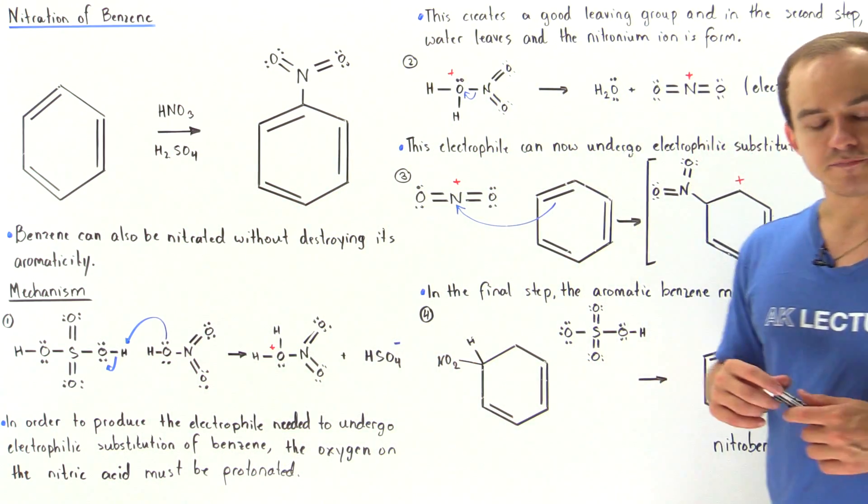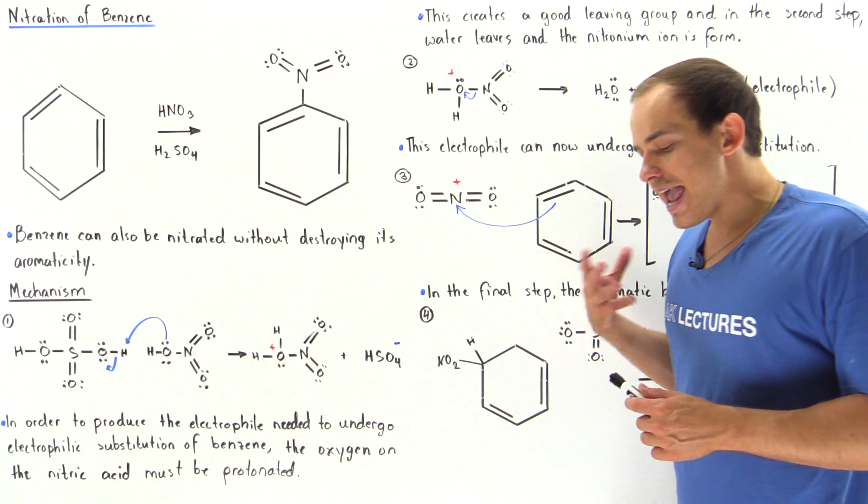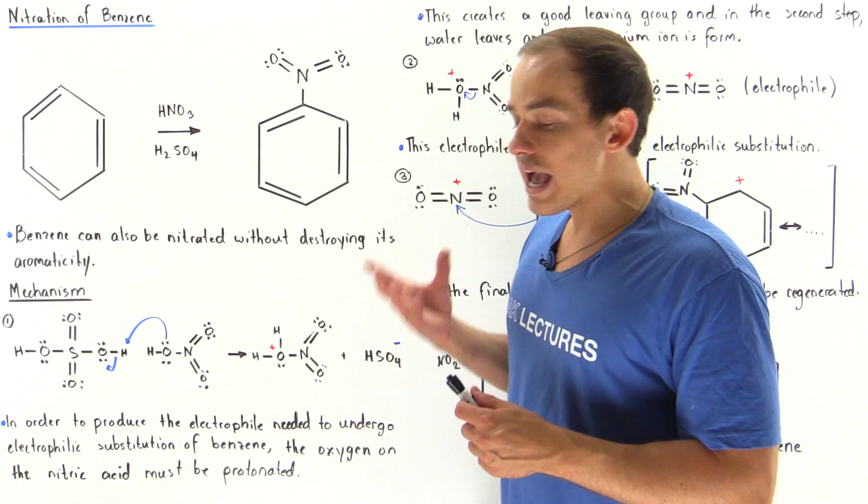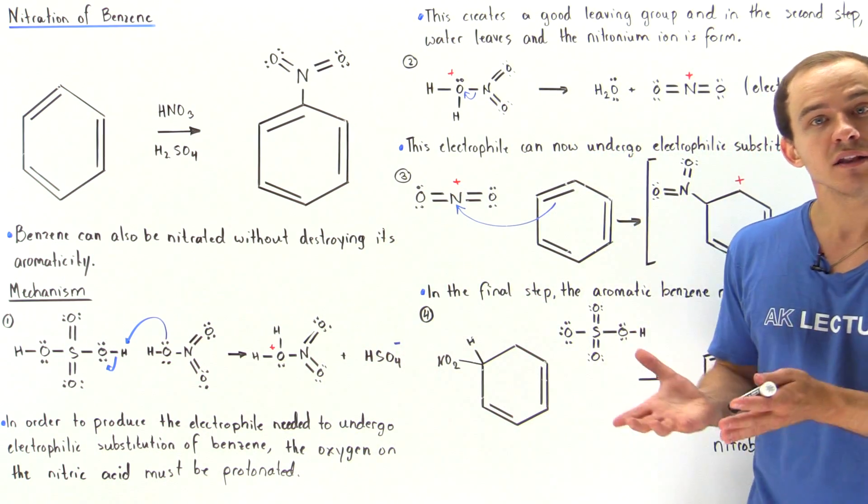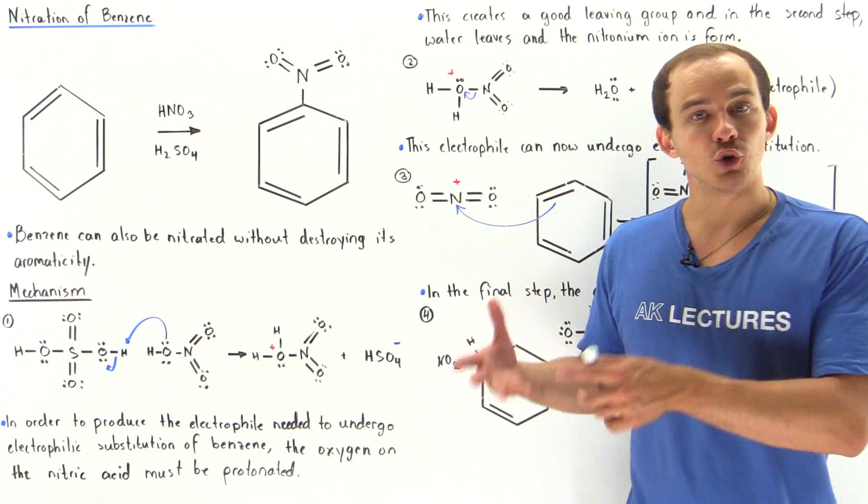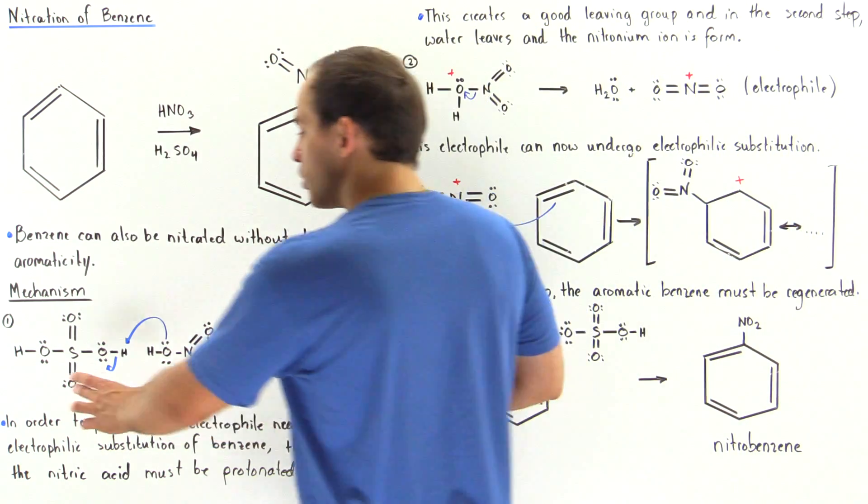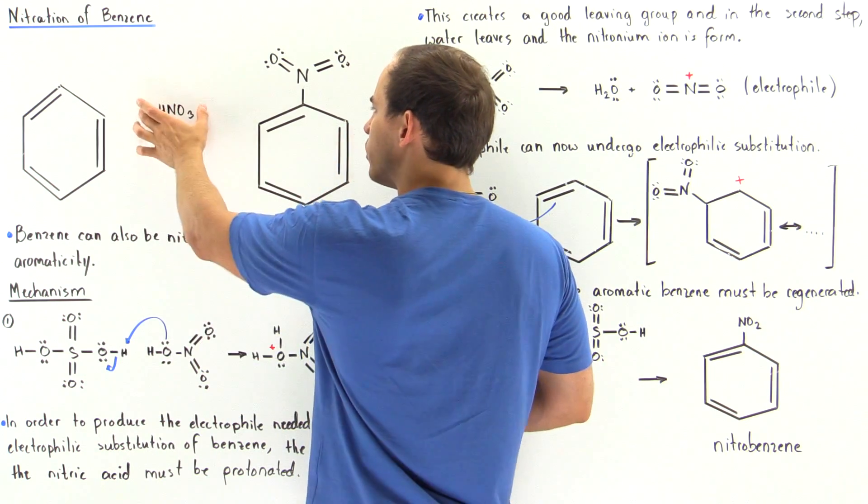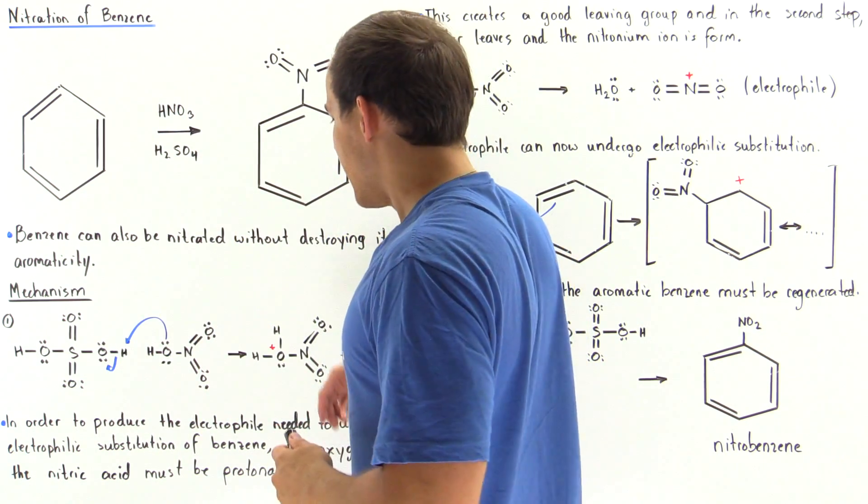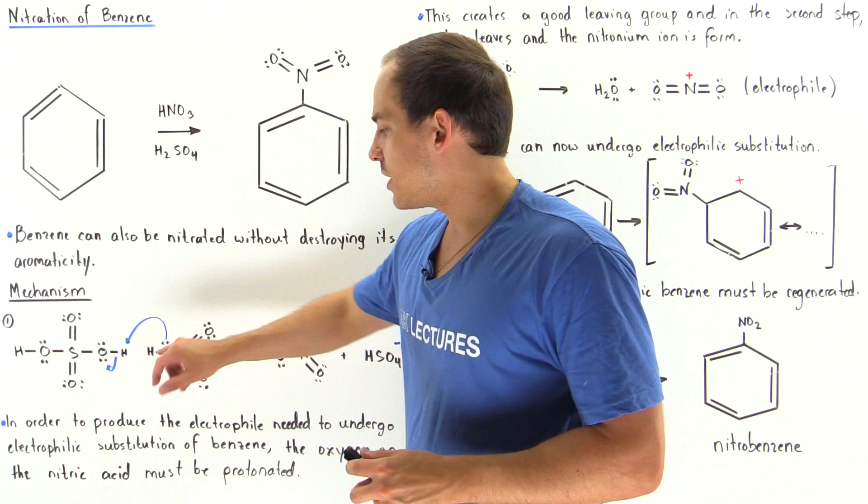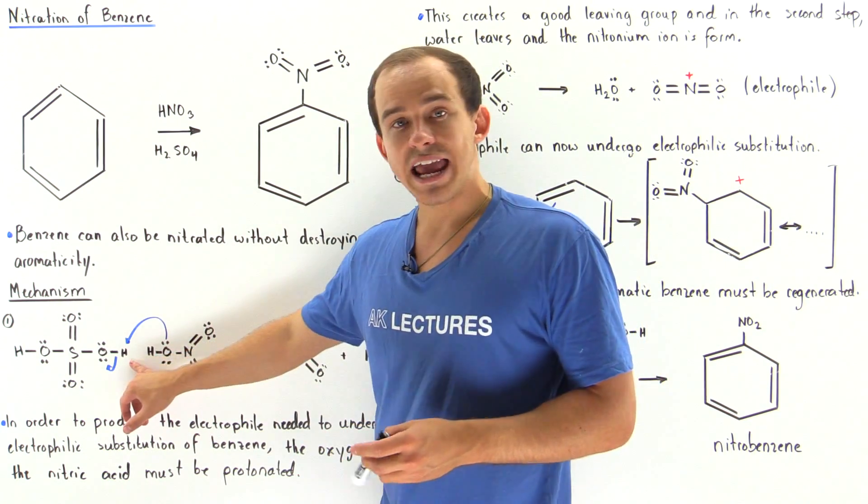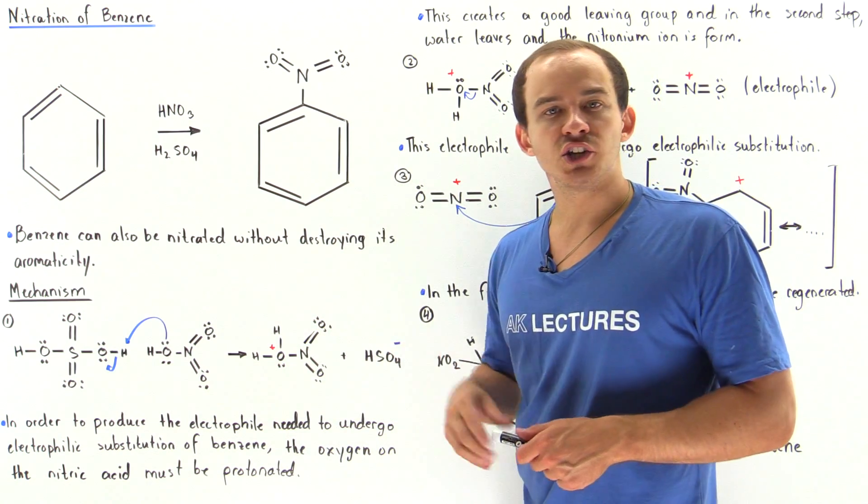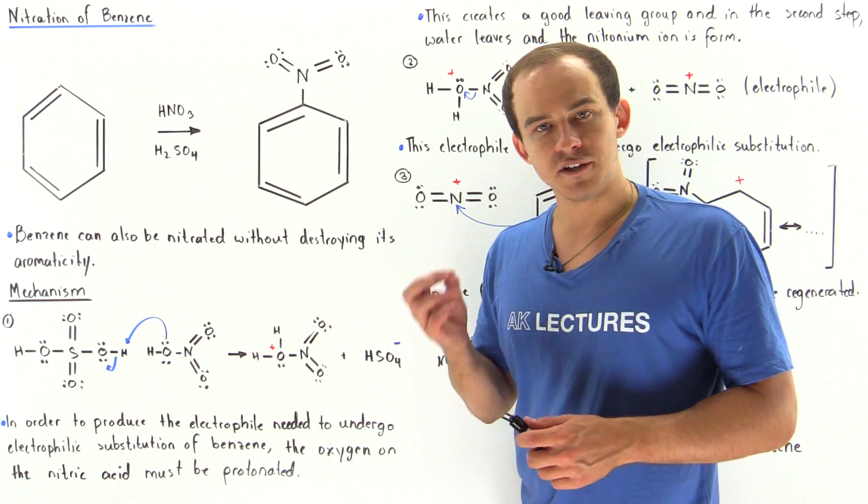Let's begin with step one. As in any electrophilic substitution reaction with benzene, we have to form our electrophile, our molecule that will act as the Lewis acid. Sulfuric acid reacts with nitric acid, and the lone pair on the oxygen takes this H away from sulfuric acid to produce a molecule that now contains a good leaving group.